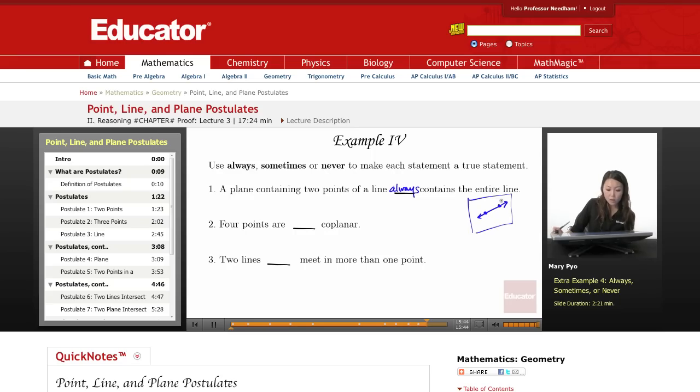Four points are always, sometimes, or never co-planar. Well, this is actually going to be, well, let's see. If I have a plane like this, let's say I draw a line through that plane